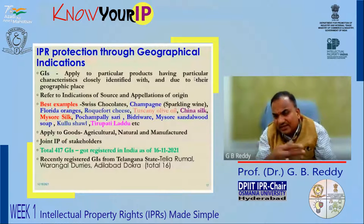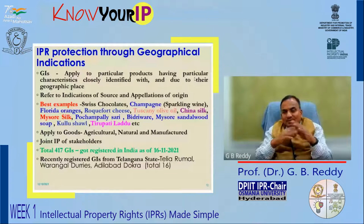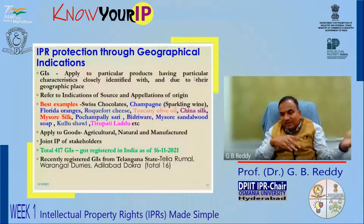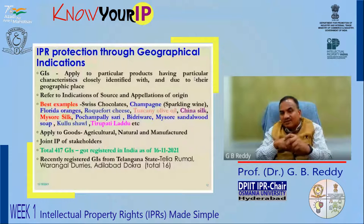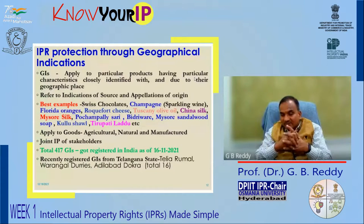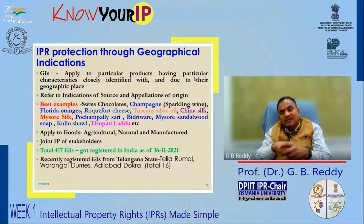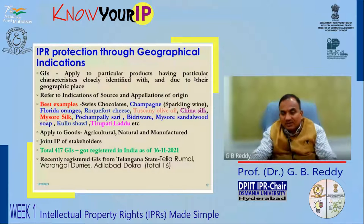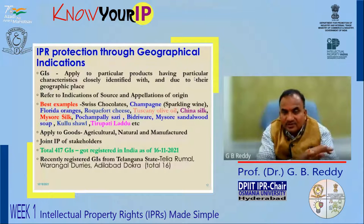About GIs — some of the best examples include Swiss chocolates, champagne, Rockford cheese, and Tirupati Laddu which has been registered as a GI. There are about 417 GIs registered as of 16th November 2021. From the Telangana and Andhra Pradesh region there are so many: Telia Rumal, Warangal Duris, Dokra, and others.